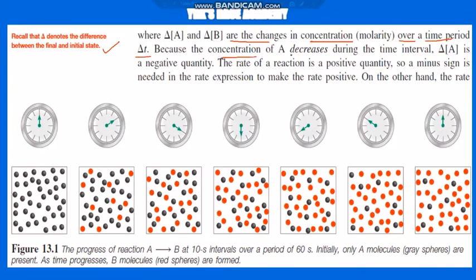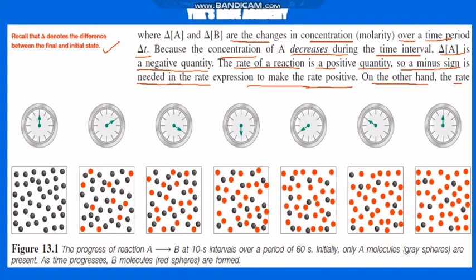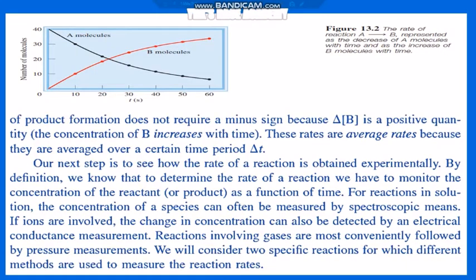Because the concentration of A decreases during the time interval, ΔA is a negative quantity, but the rate of reaction must be a positive quantity. So a minus sign is needed in the rate expression to make the rate positive. On the other hand, the rate of product formation does not require a minus sign because ΔB is positive — the concentration of B increases with time. These rates are average rates, averaged over a certain time period ΔT.